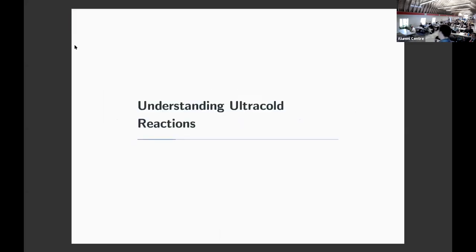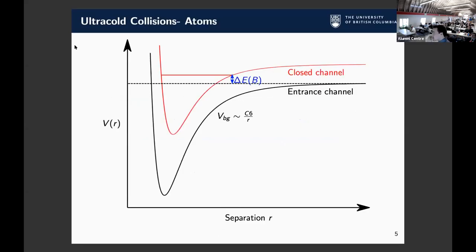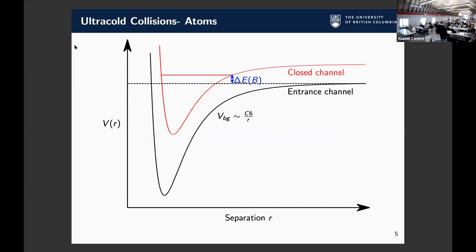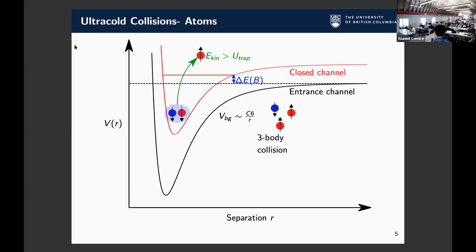How do we go about understanding how these ultracold reactions happen? I'll start with a picture of a Feshbach resonance. In an ultracold collision of an atom, you have some entrance channel and then some closed channel at a different energy. Usually you can tune the relationship between the two with a magnetic field. If you have two atoms coming in, spins couple, you can have a spin flip and make a molecule.